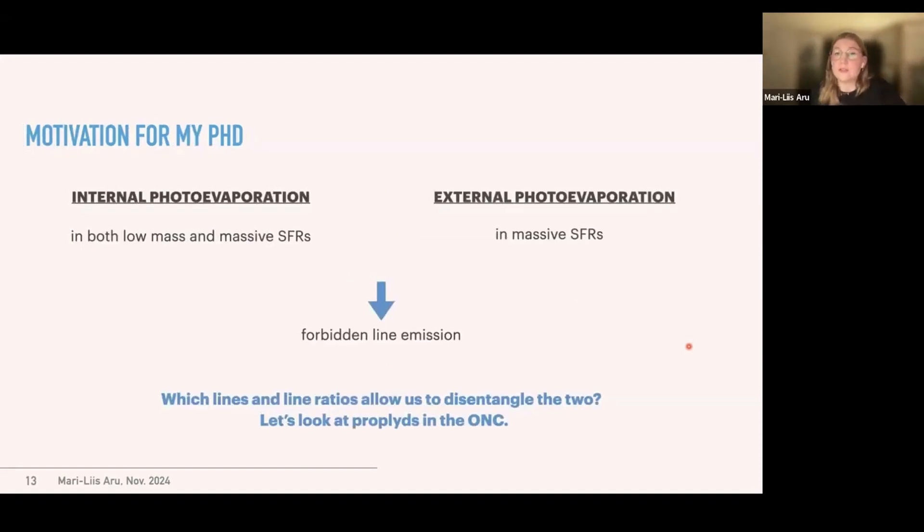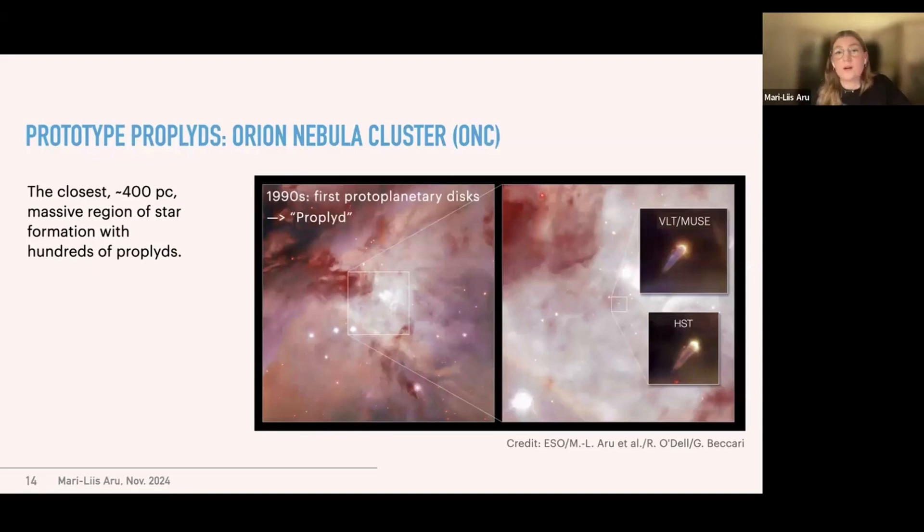So coming to the motivation for my PhD, we have these two different mechanisms at play. So one is happening in both low mass and massive star forming regions, and the other happening only in massive star forming regions. But they both lead to the forbidden line emission. So the question arises on which lines and line ratios should be used to disentangle these two effects. And in order to study that, we are looking at the proplyds in the ONC. The proplyds there are, so to say, prototype proplyds, because they were the very first protoplanetary disks to be found. And so the term proplyd actually is just a contraction of the term because they were the first ones to be found.